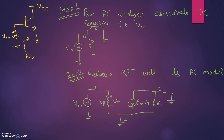For step one, we have to deactivate all the DC sources — that is, VCC will be inactive. So the modified circuit will be like this. The VIN, as it is an AC source, remains. The collector terminal is grounded because VCC is zero. Step two: replace the BJT with its AC model. The B, C, E terminal mapping is applied, and the same circuit is shown here.